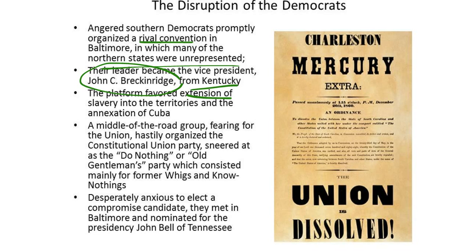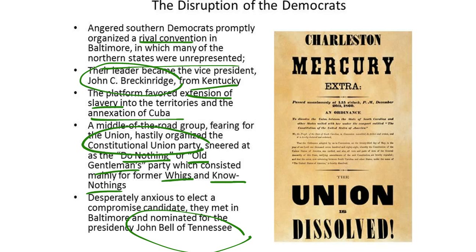The platform favored the extension of slavery into the territories and the annexation of Cuba. A middle-of-the-road group, fearing for the Union, hastily organized the Constitutional Union Party, which was sneered at as the Do-Nothing or the Old Gentleman's Party, consisting mainly of former Whigs and Know-Nothings. Desperately anxious to elect a compromise candidate, they met in Baltimore and nominated for the presidency John Bell of Tennessee.